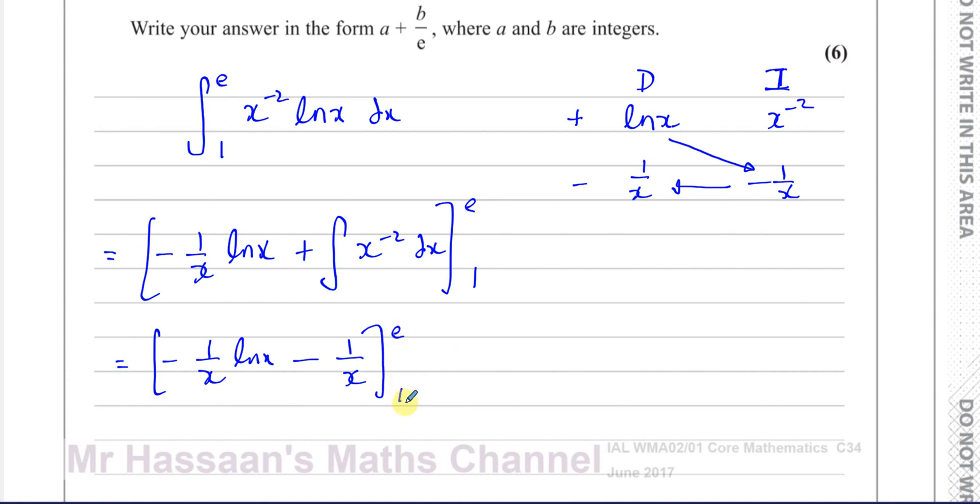We've got limits, so we're going to put e and 1 in there. First we substitute e into this. We have minus 1 over e times ln(e) minus 1 over e. And take away what happens when you substitute 1 in there, minus 1 over 1 times ln(1) minus 1 over 1. We know that ln(e) is 1, so this is minus 1 over e minus another 1 over e. And minus, well this gives you 0 because ln(1) is 0.